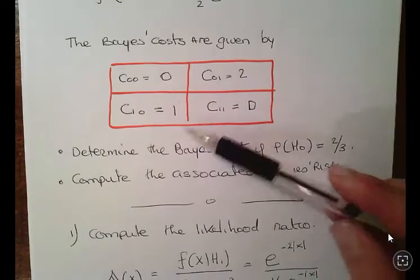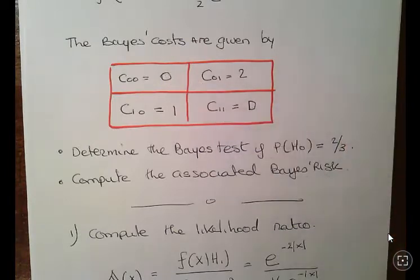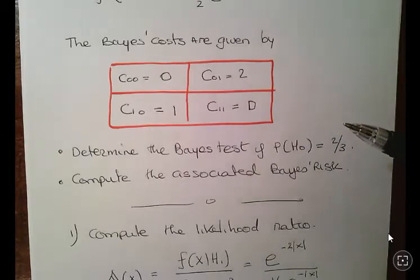Now just normally what happens here is quite often the cost of a correct decision will be zero. So determine the Bayes test if the probability of H0 is equal to two-thirds and compute the associated Bayes risk.